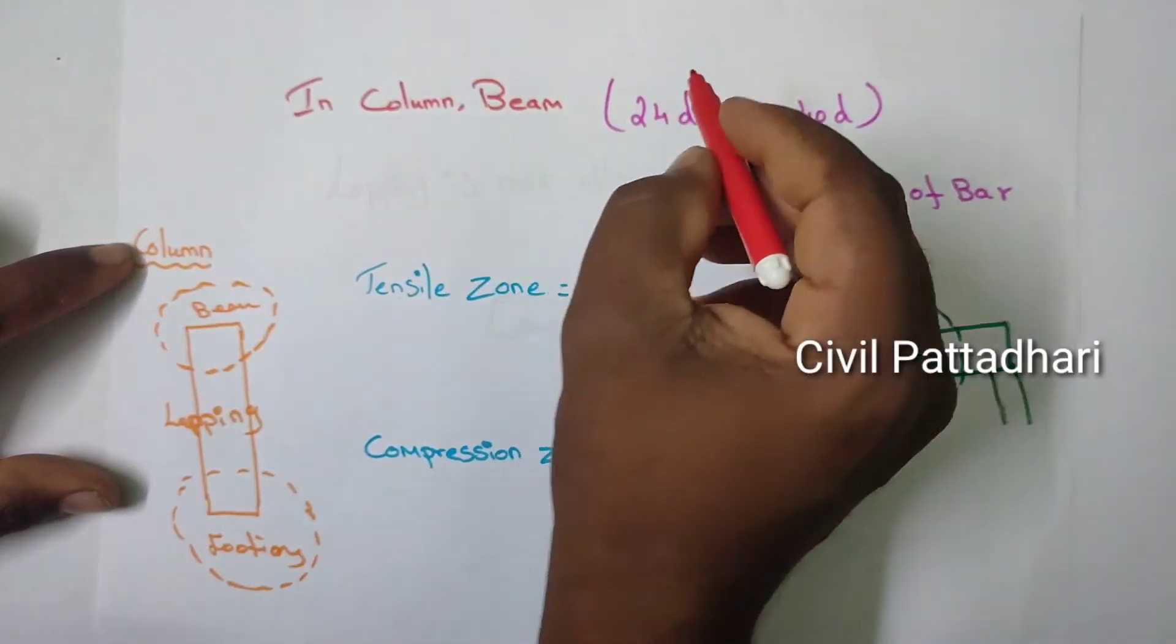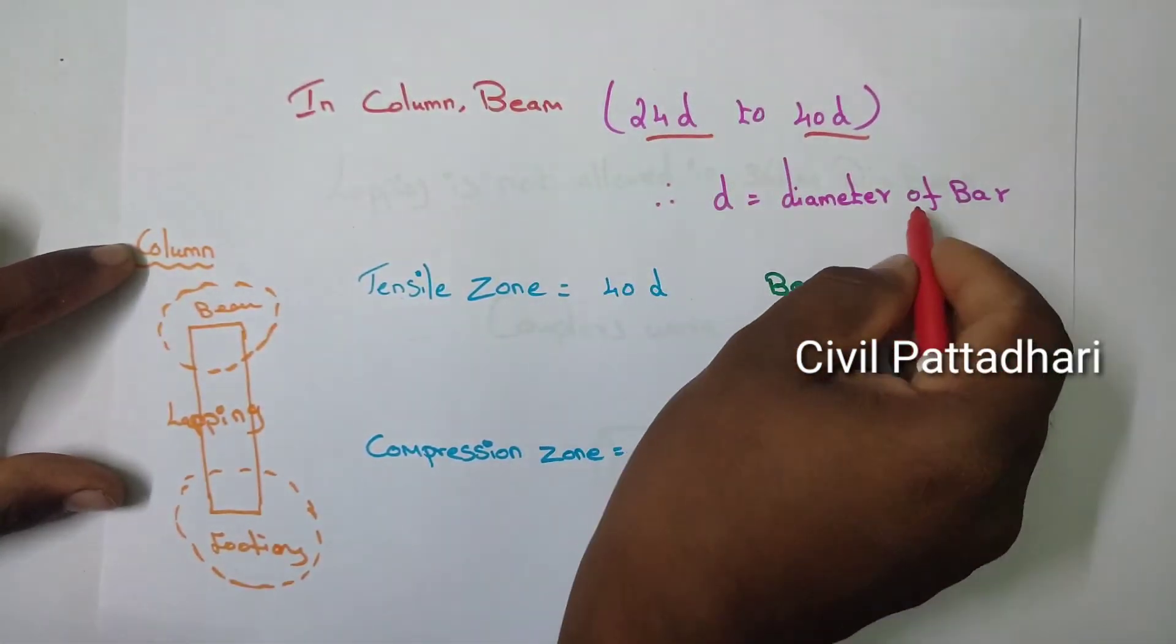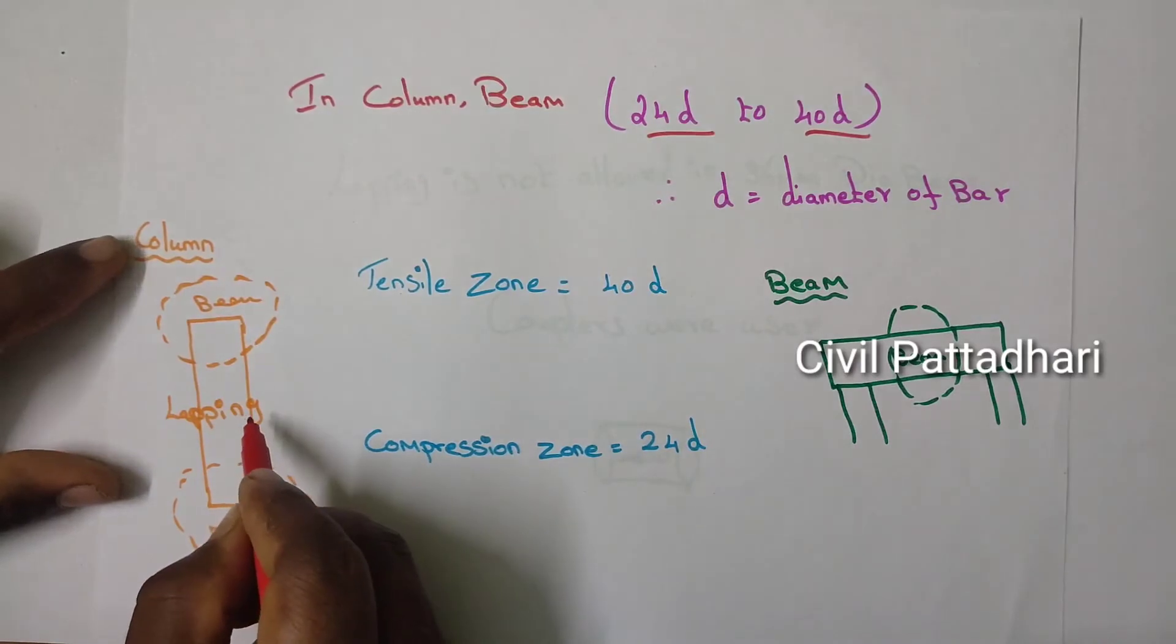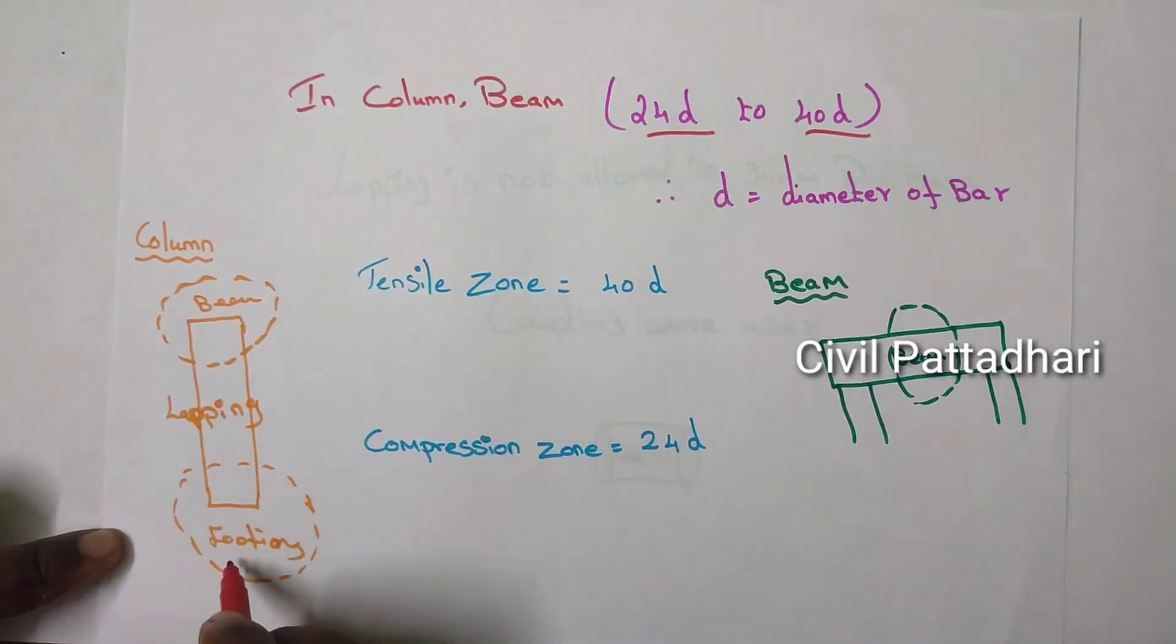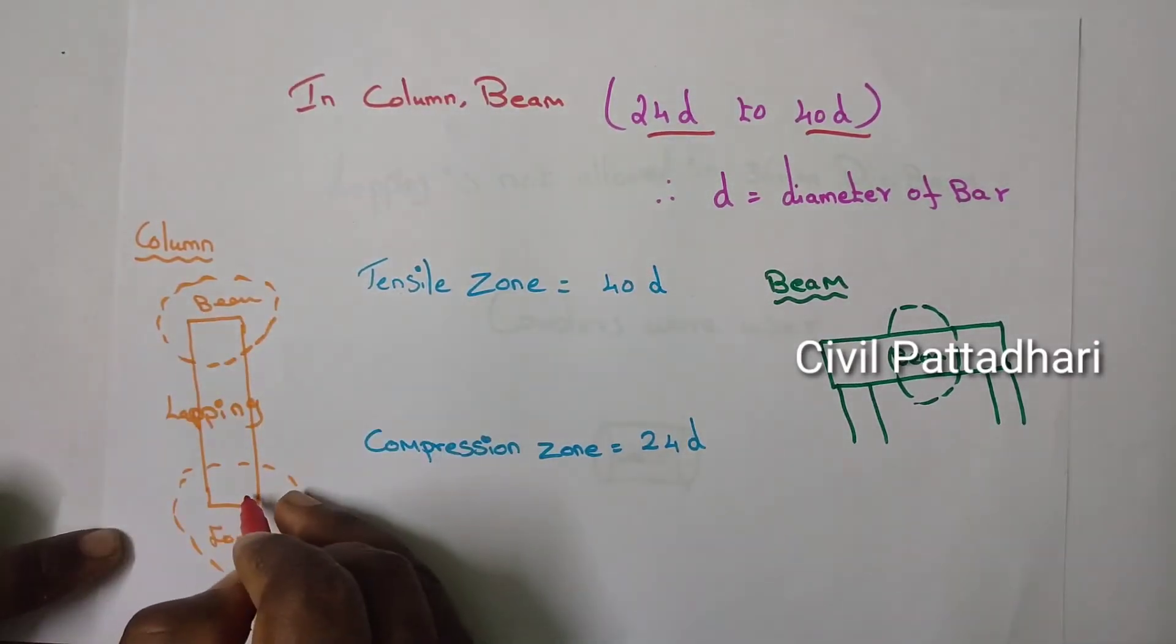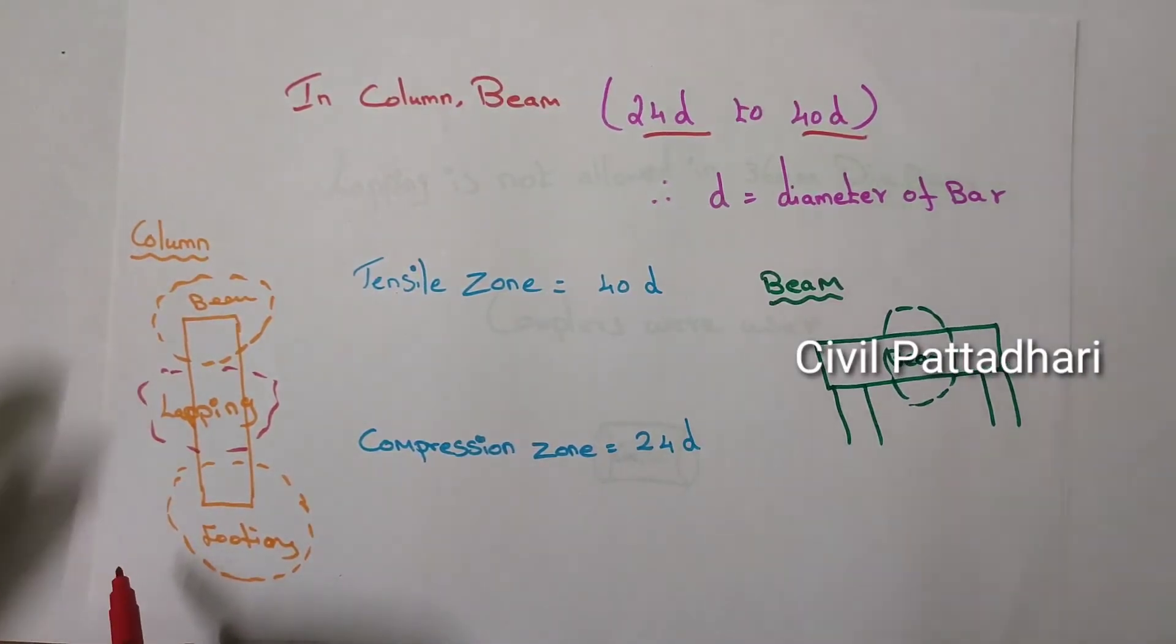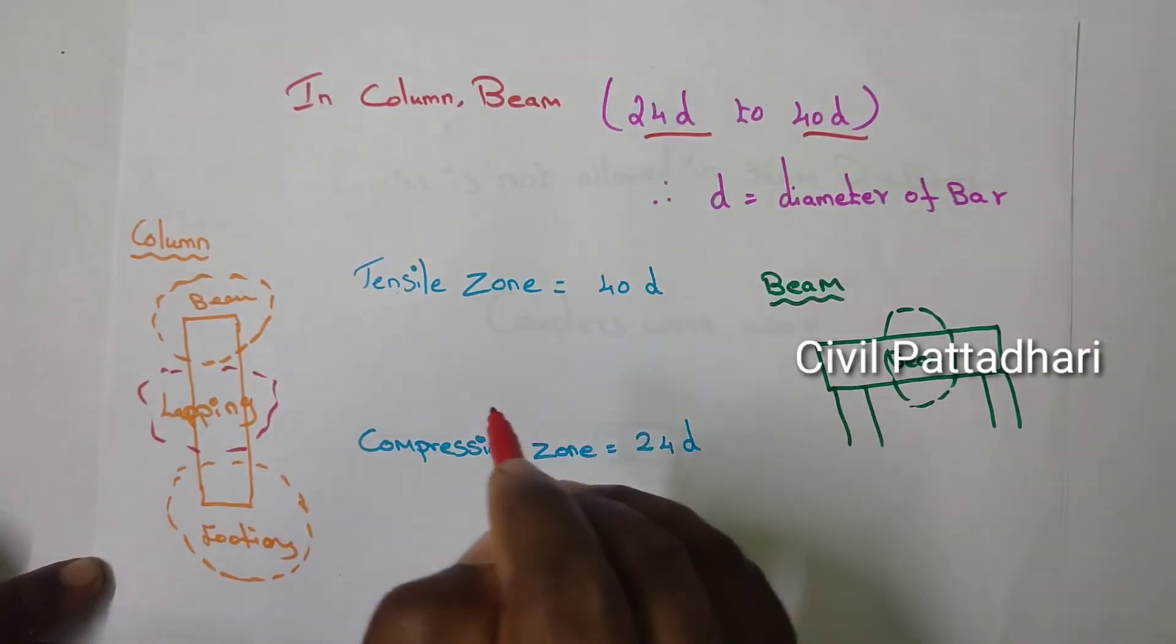In beam and column, the lapping length varies from 24d to 40d, where d is the diameter of the bar. In the column, the lapping is only made at the mid of the column because the supports are transferring the load at the edges. At the down portion the footing will be supported, and the upper portion the beam will be supported. So the lapping should not be done on both edges. Instead, the lapping is only done at the center of the column. In column, the lapping is normally 40d. The formula for the lapping length of the column is 40d.